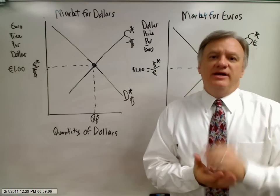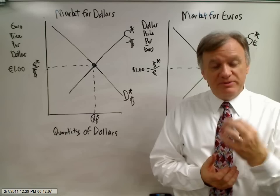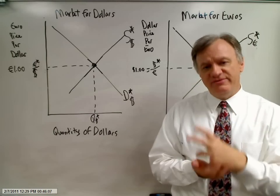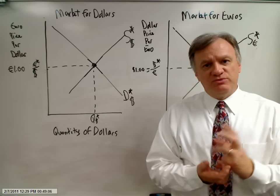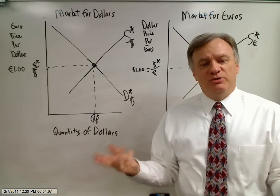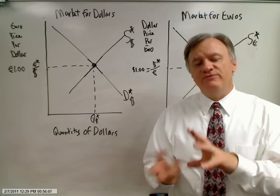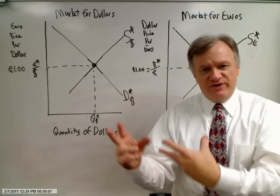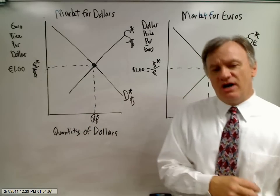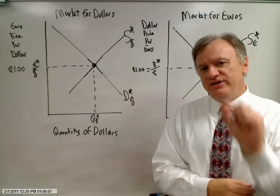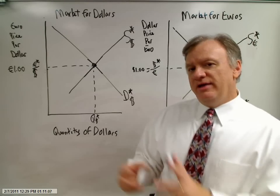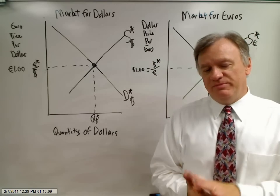We're going to assume that interest rates, or the rate of return that people, businesses, and governments can earn on their surplus savings, is now higher in the U.S. relative to Europe. So where's money going to want to flow? Financial capital is going to want to flow to the United States. Because money wants to come here, the market for euros is going to be affected first.